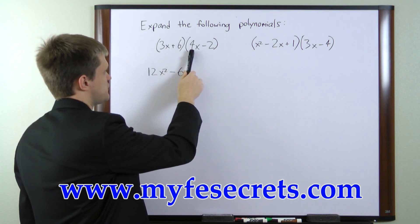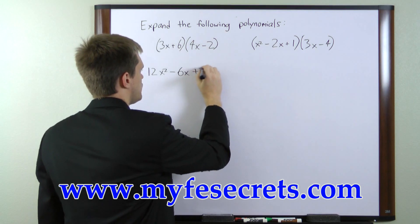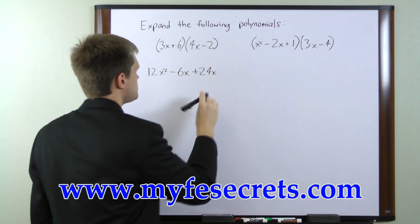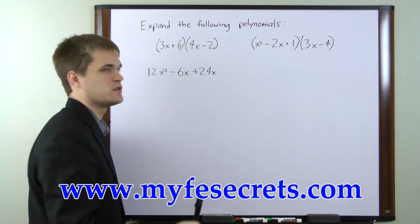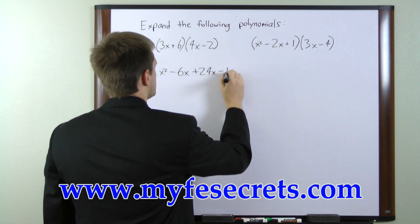The inside pair, 6 times 4x, gives us 24x. And the last pair, 6 times negative 2, gives us a minus 12.